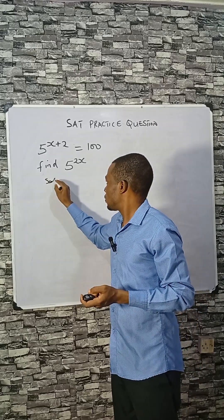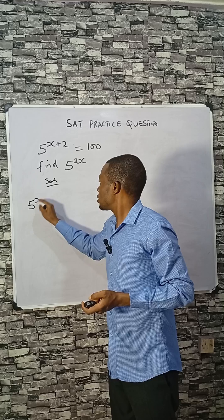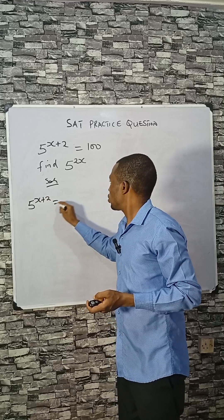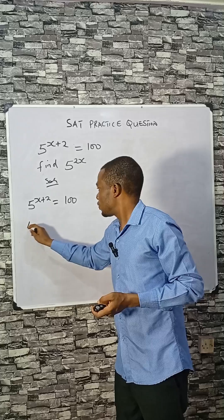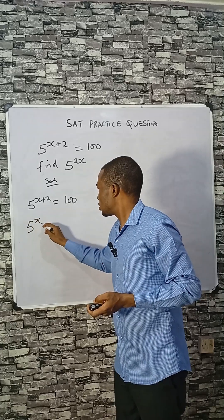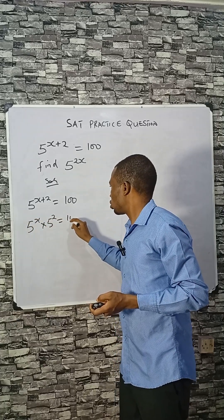Let's do it together. 5 raised to the power of x plus 2 equals 100. What you need to do is split this: 5 raised to the power of x times 5 raised to the power of 2 equals 100.